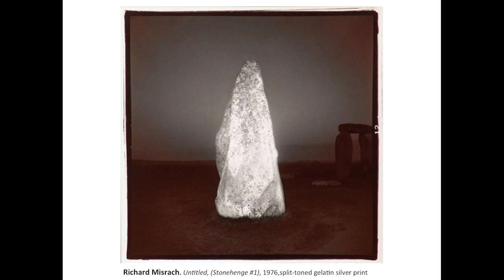Shapes can create figure-ground relationships. The figure is generally the focal point of the image, and the ground is the background. In this Richard Misrach photograph, the Stonehenge rock is the figure, and the rest the ground. The figure is a positive shape, or a positive space. It attracts our attention. It's protruding in importance, as well as spatially. It seems to pop forward from the composition.